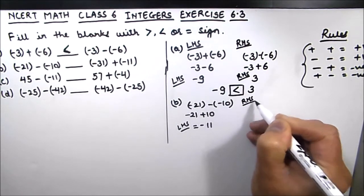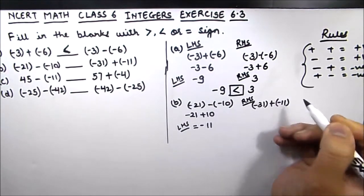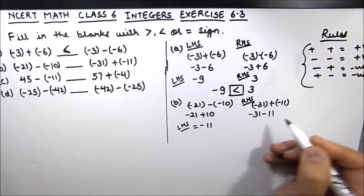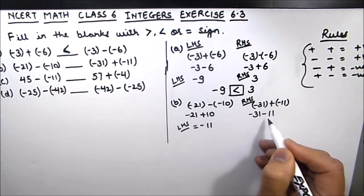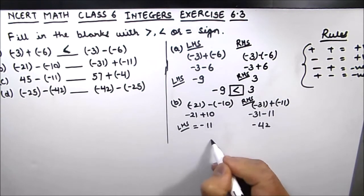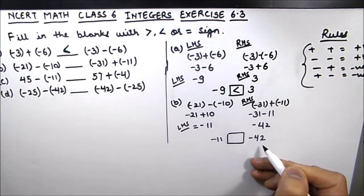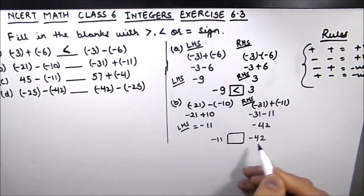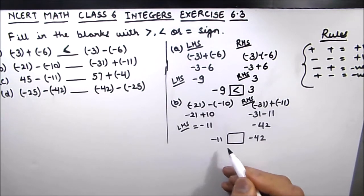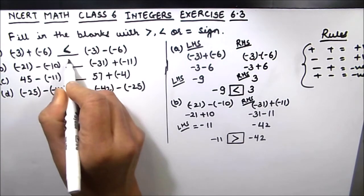The right hand side is (-31) + (-11). We write -31 as is. Plus and minus gives us minus 11. Both numbers are negative so we add them: 31 + 11 = 42, and the sign is negative, giving us -42. We have -11 and -42. Since -42 is less than -11, and in negative numbers the lesser the number the bigger its value, -11 is greater than -42. The second blank is greater than.